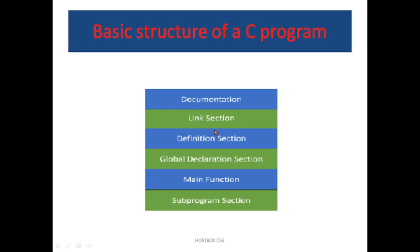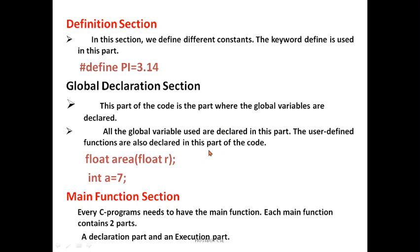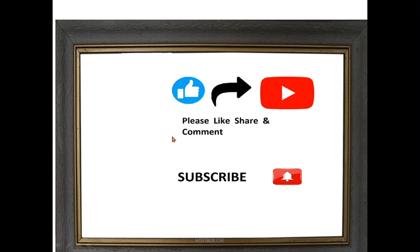So remember: what are the features of C language, how to install it easily, and the structure of C — six parts: documentation (not mandatory), link section, definition section, global declaration, main function, and subprogram function. These are the basic structure of C programming. In upcoming sessions, we will discuss tokens, data types, how to write your first C program, and execute it. If you have any queries or suggestions, please communicate on social media like Twitter and Facebook. Please like, share, comment, subscribe, and press the bell icon for more updates. Thanks for watching.